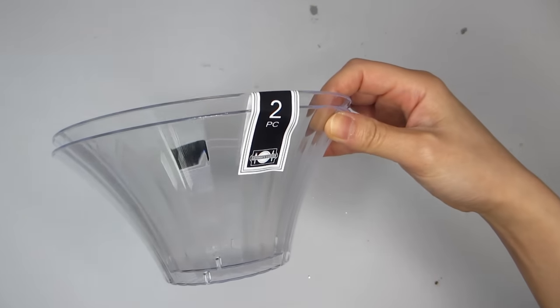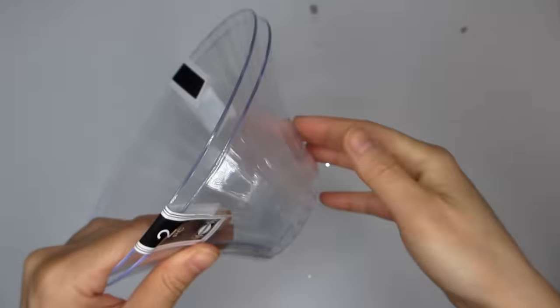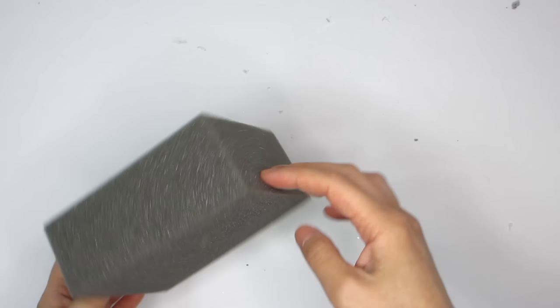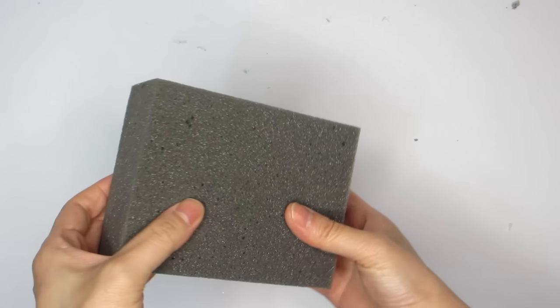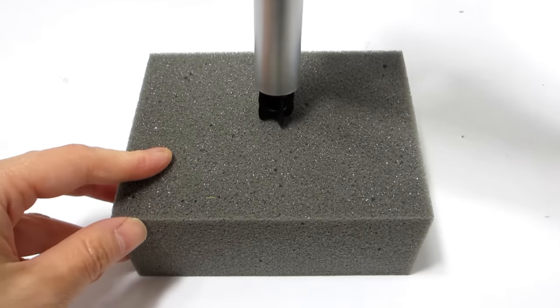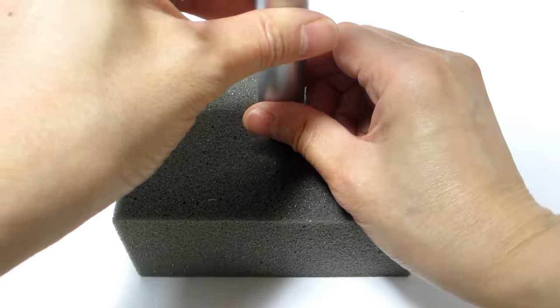For our seventh lamp of the day, we are going to take these two clear bowls from the Dollar Tree. These bowls come in a two pack, which will be perfect for our lamp. We'll also be using this firm foam piece to make the base of our lamp. In the center is where a solar garden stick will go. So we're going to create a hole the size of the solar garden stick.